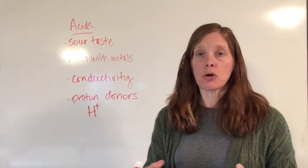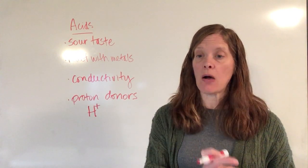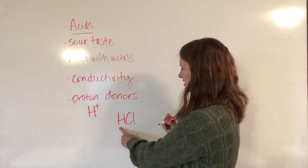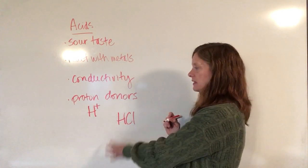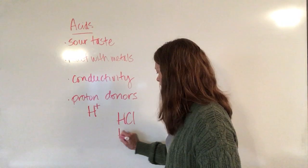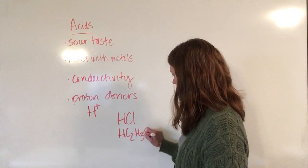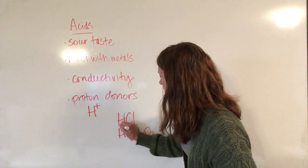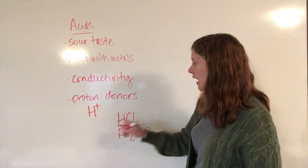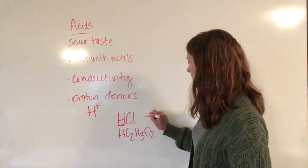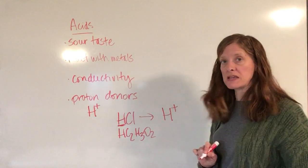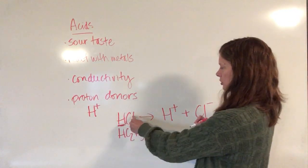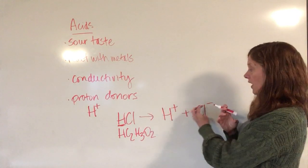The easiest way to recognize whether a chemical formula is an acid is that it starts with an H. For example, HCl — this H is going to break off from the Cl and get donated to something else. The H+ breaks off and the chloride ion is left behind; the hydrogen gives its electron to the chlorine, which really wants that electron, leaving hydrogen with a positive charge.